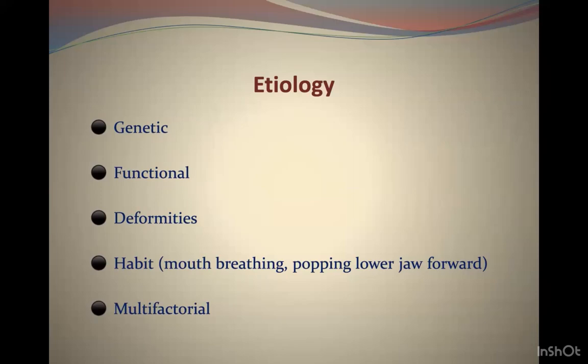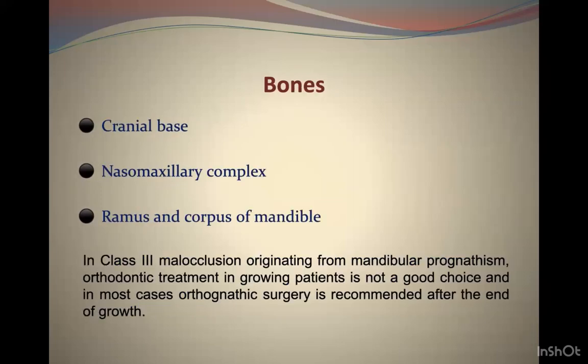It can also be caused by habits such as mouth breathing and popping the lower jaw forward. Several bones of the skull are involved in complex malocclusion: the cranial base, the naso-maxillary complex, and the ramus and corpus. The whole skull actually contributes toward the creation of Class 3 malocclusion.